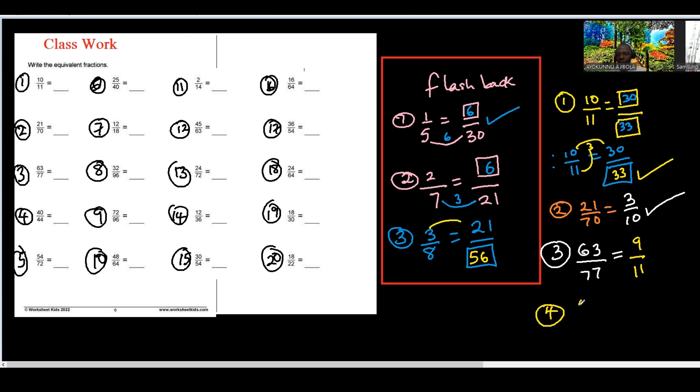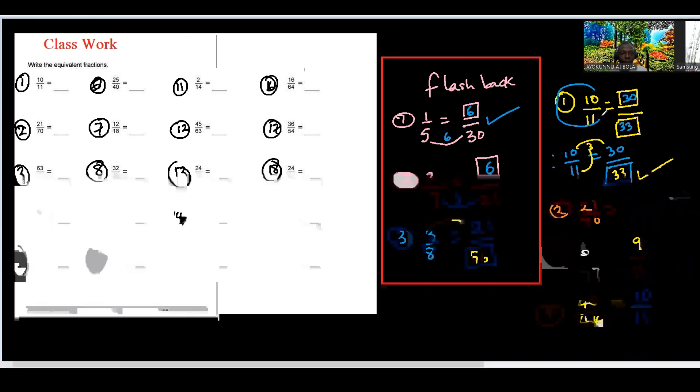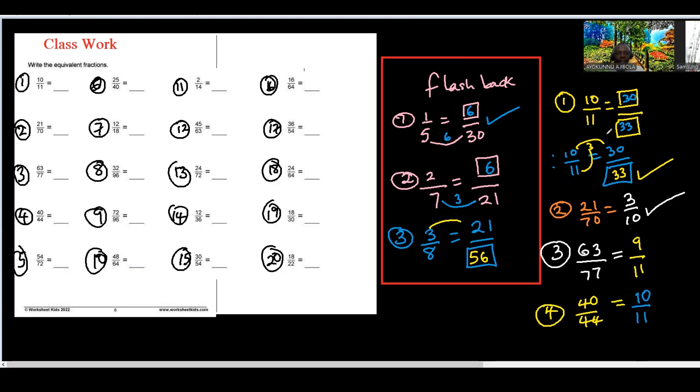What about number 4? We have 40 over 44. And 40 over 44, if we use 4 to divide them, what do we have at the front there? We have 10 over what? 11. Because 4 into 40 is 10, and 4 into 44 is 11. So the same number must be used to divide them. But the first one, I couldn't divide. Do you remember why I could not divide? Because nothing is common as a factor to them. That's why I had to multiply in order to get an equivalent fraction to that fraction.